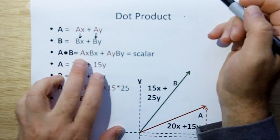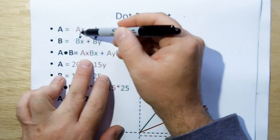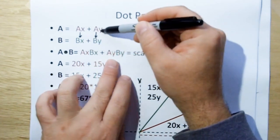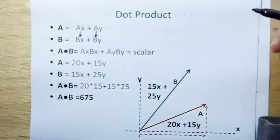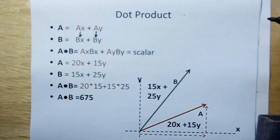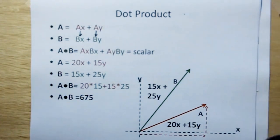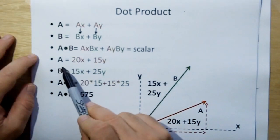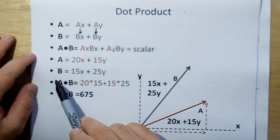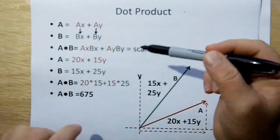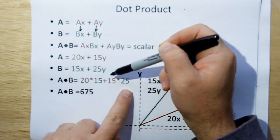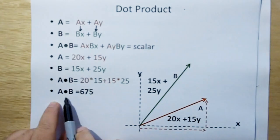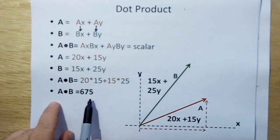The dot product of A and B is AX*BX plus AY*BY. And you sum these together, it results in a scalar, meaning a non-vector quantity. To give you an example, given A equals 20x plus 15y and B equals 15x plus 25y, you basically take 20 times 15 plus 15 times 25. You sum it together and you find that the dot product of A and B is 675.